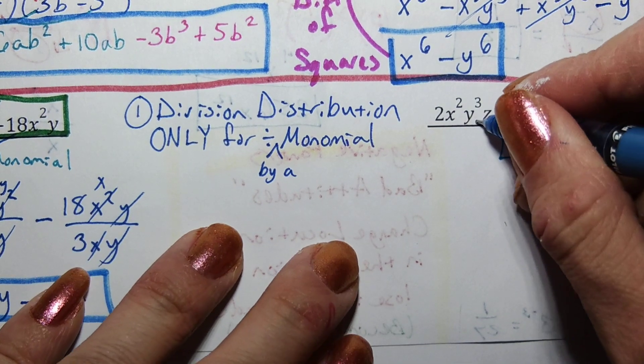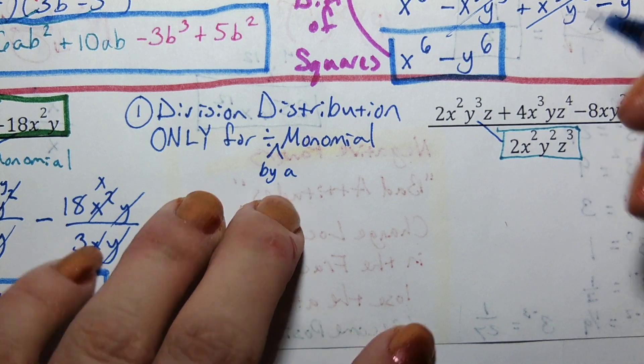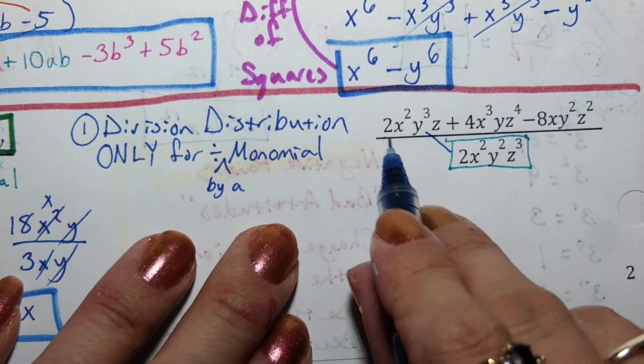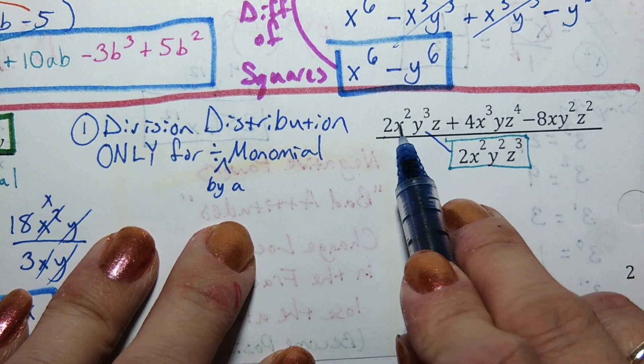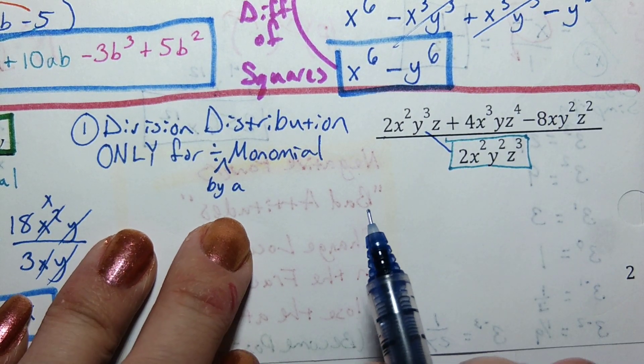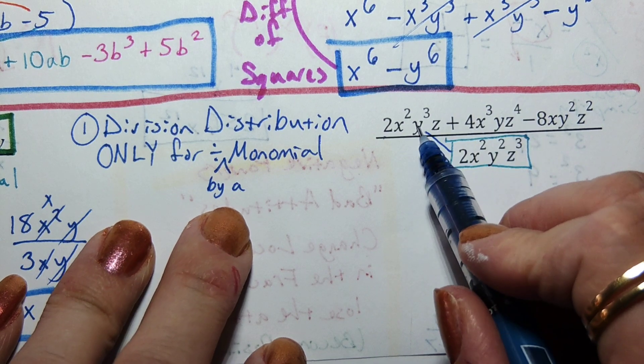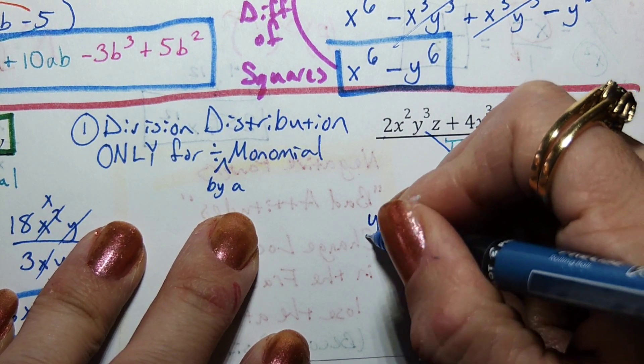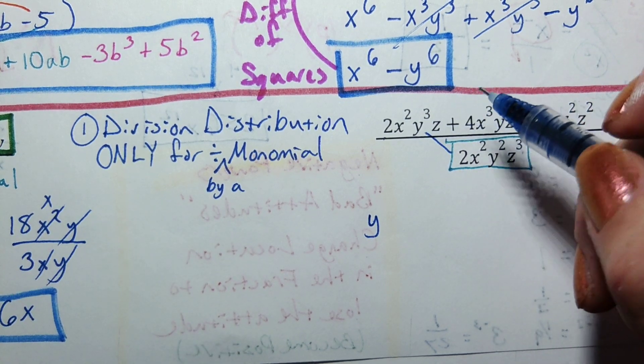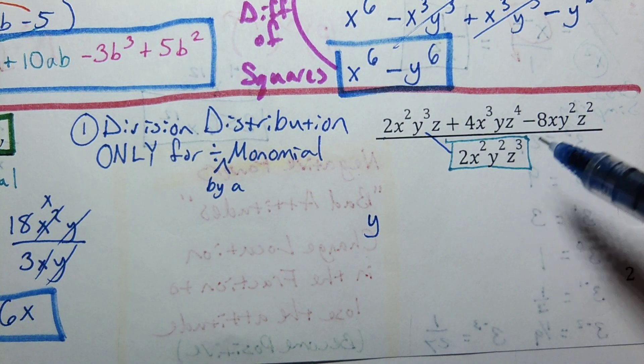So I'm going to take the first chunk divided by this bottom one. Folks, what's 2 divided by 2? One - we don't have to put the one there. What's x^2 divided by x^2? Also one. What's y^3 over y^2? One y.